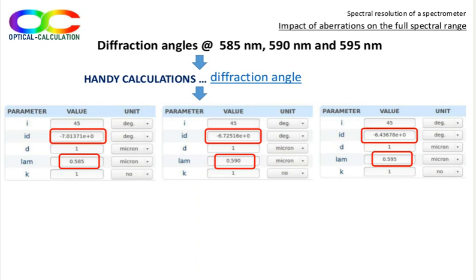The calculated diffraction angles for the extreme and central wavelengths are presented in the tables. We can see that the maximum change in diffraction angle referred to the center wavelength one is less than 0.3 degrees, plus or minus 0.3 degrees.